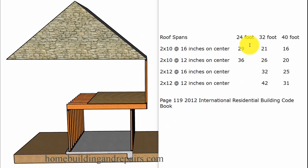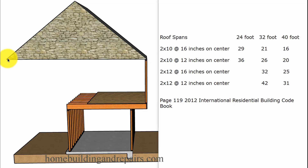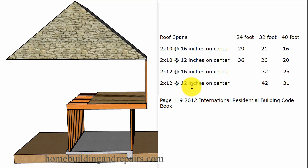Let's take a look at some numbers. The example we are using is 2x12 floor joists 16 inches on center with a 32-foot roof span. If we have a 32-foot roof span and 16-inch on-center spacing for 2x12, then the maximum cantilever distance would be 32 inches. If we change them to 12 inches on center, the maximum distance would be 42 inches.